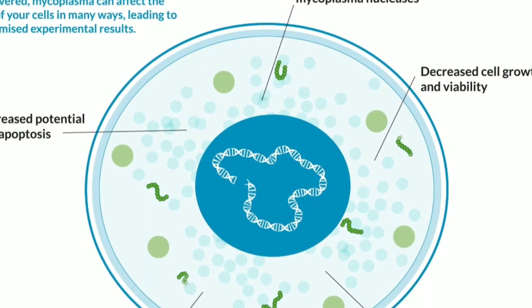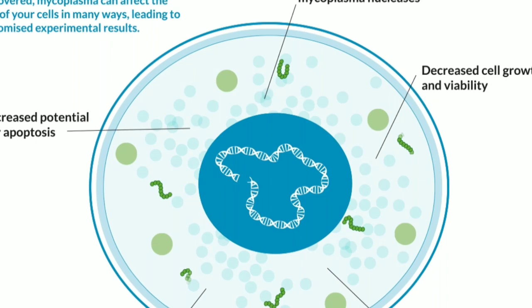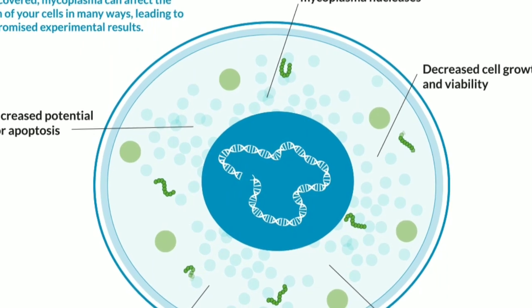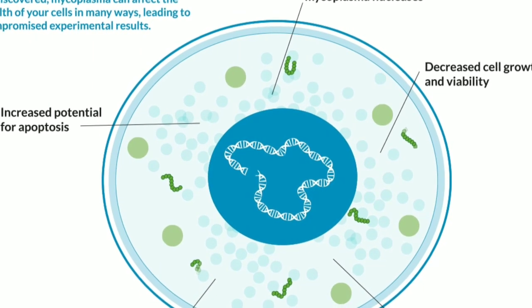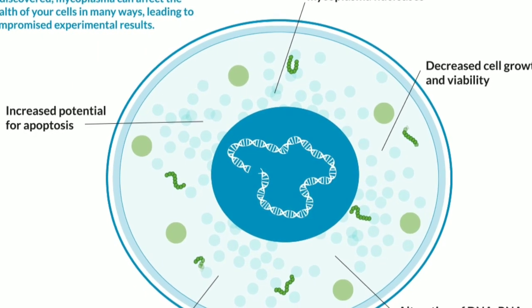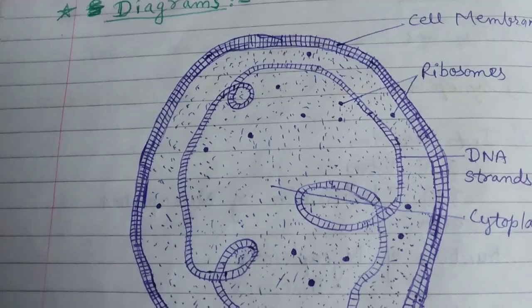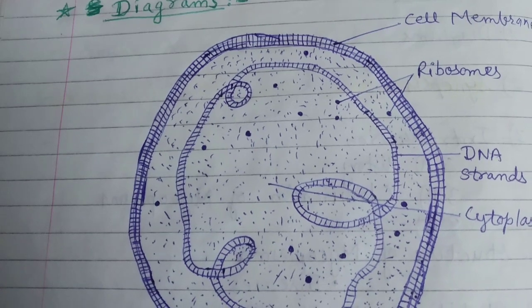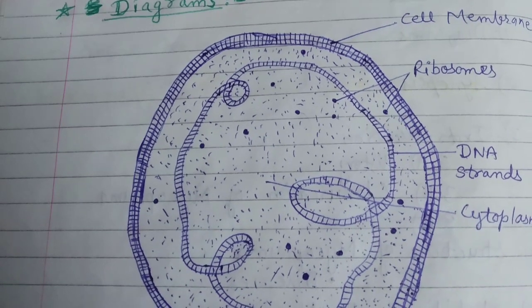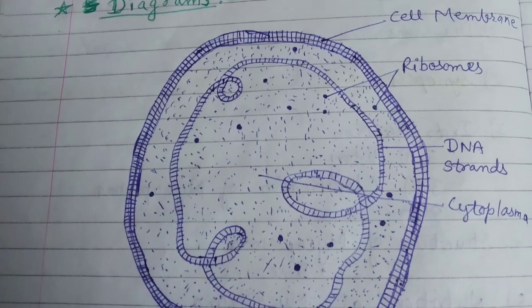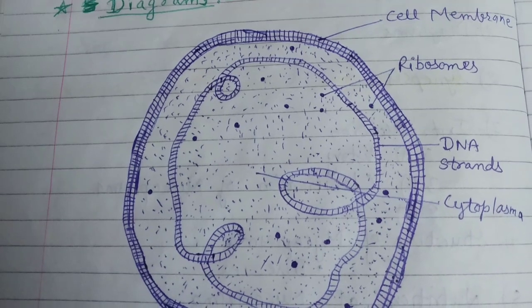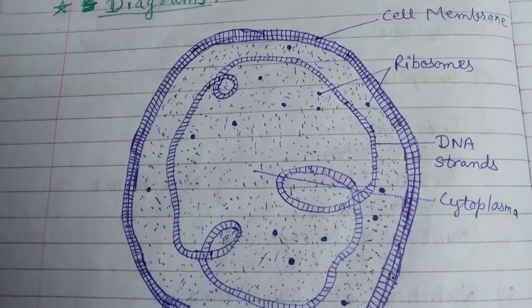Plant diseases such as broom of potato, corn stunt, aster yellows, and others are caused by mycoplasmas, as can be observed in plants.